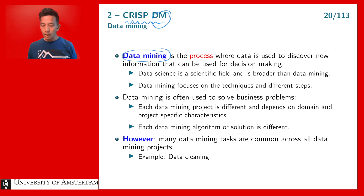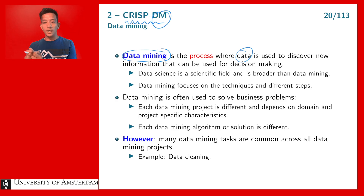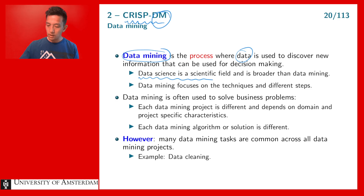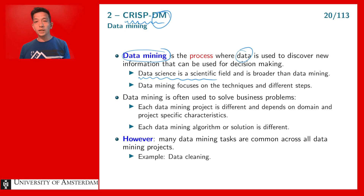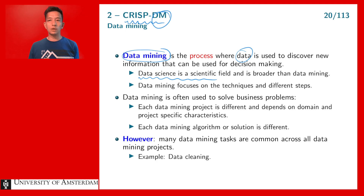So what is data mining? Data mining is the process where data is used to discover new information that can then be used for decision making. Data mining is very close to data science, but the difference is that data science is a scientific field which is broader than data mining. Data mining focuses on the process, the different techniques, and the different steps you have to take to solve a problem — and very often those problems are business problems.